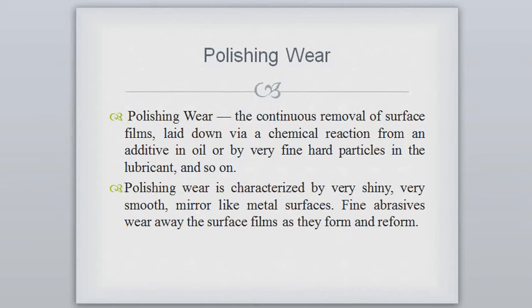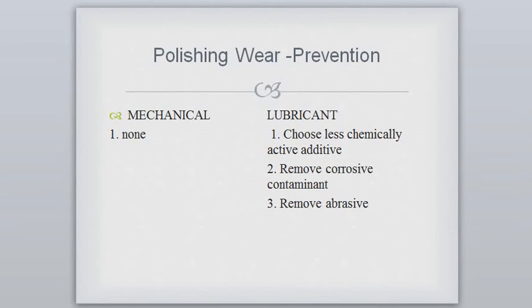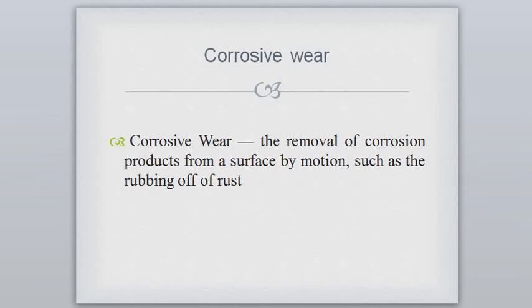Next is polishing wear. Polishing wear is a continuous removal of surface film brought about by a chemical reaction from additives in oil or by very fine hard particles in the lubricant. It is characterized by a very fine, very smooth, mirror-like metal surface. Preventions: mechanically, there is no method applicable. For lubricant, choose less chemically active additives, remove corrosive contaminants, and remove abrasives.